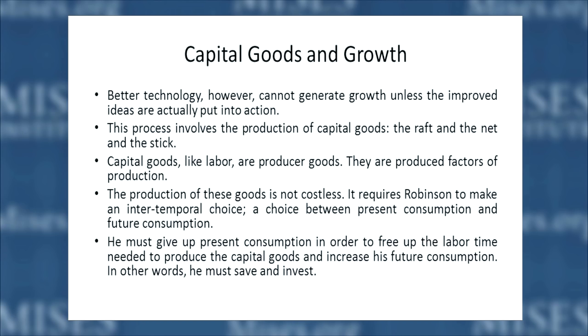If Robinson wants to switch from fishing with his bare hands to using a raft and net, he has to use resources to produce the raft and net first. These goods — the raft, the net, the stick — are capital goods, defined as the produced factors of production. Labor is not a produced factor of production; it is endowed by nature to Robinson. But the raft, net, and stick are capital goods: he has produced them and will employ them in further production rather than consuming them. They are produced factors of production.